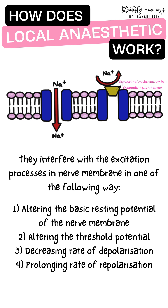Local anesthesia works by interfering with the excitation process in the nerve membrane. It can alter the basic resting potential, alter the threshold potential, decrease the rate of depolarization, or increase the rate of repolarization. When the nerve is at rest — meaning there is no stimulus — it is said to have a resting potential, and polarization of the membrane continues.